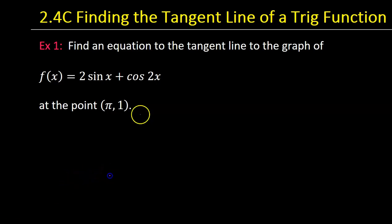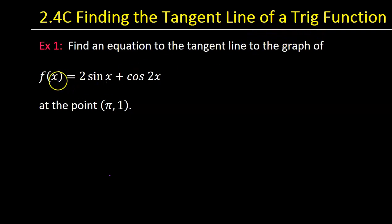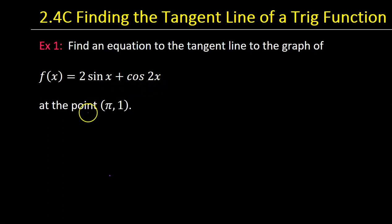In this video I will show you how to find the tangent line of a trig function. We have the function f of x equals 2 sine x plus cosine 2x, and we want to find the equation of the tangent line at the point pi comma 1.